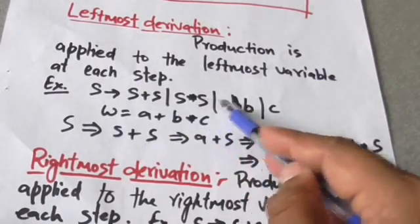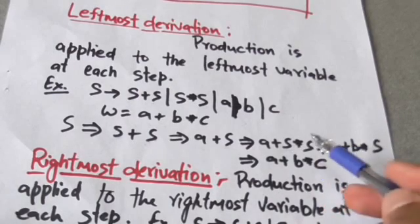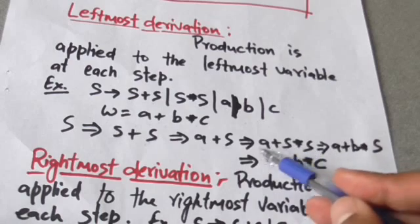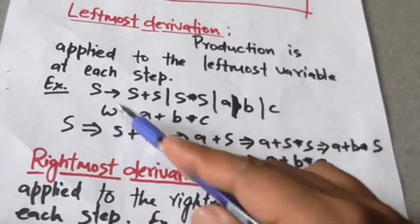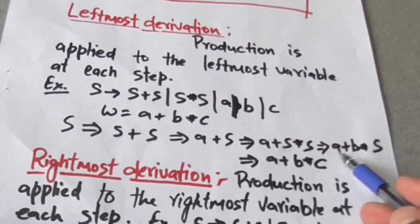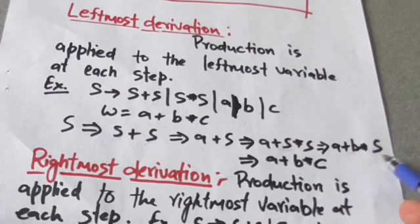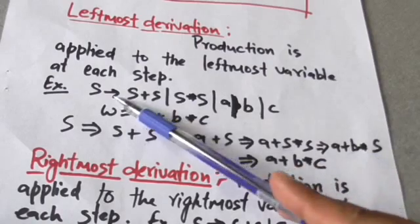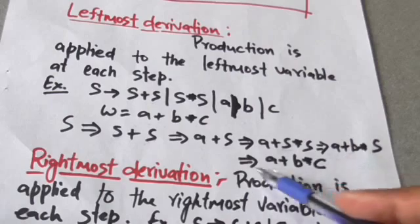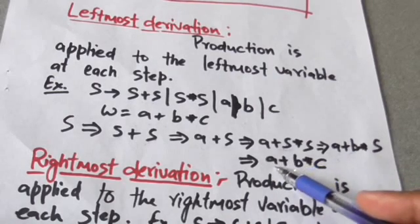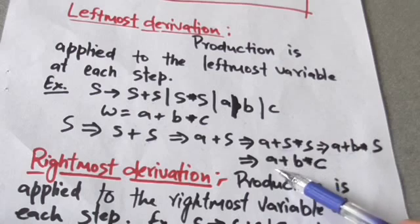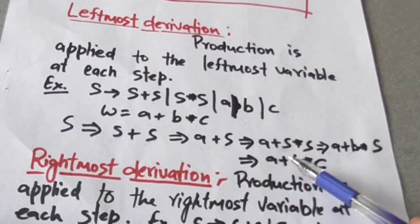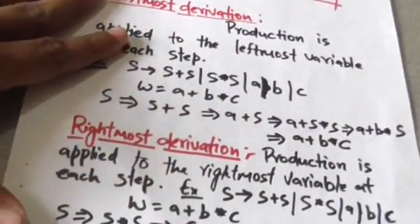Now I have applied the production rule S derives S into S, so this S is replaced by S into S. Again there are two variables, but I will apply the production rule to the leftmost variable. I have applied S derives b, so this S is replaced by b. Then to the remaining S I have applied S derives c, so this S is replaced by c. This is the leftmost derivation of the string a plus b into c.